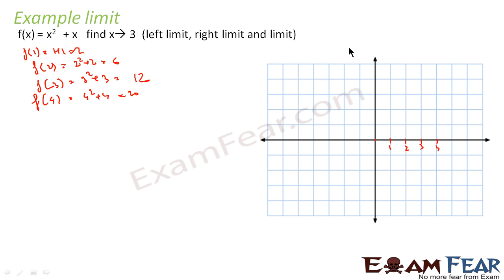You see these values are increasing exponentially. So we can say this is 0 and we will assume this is 5, 10, 15, 20 on the y-axis. So f(4) is 20, f(3) is 12 — almost near this point — f(2) is 6, and f(1) is almost this point.